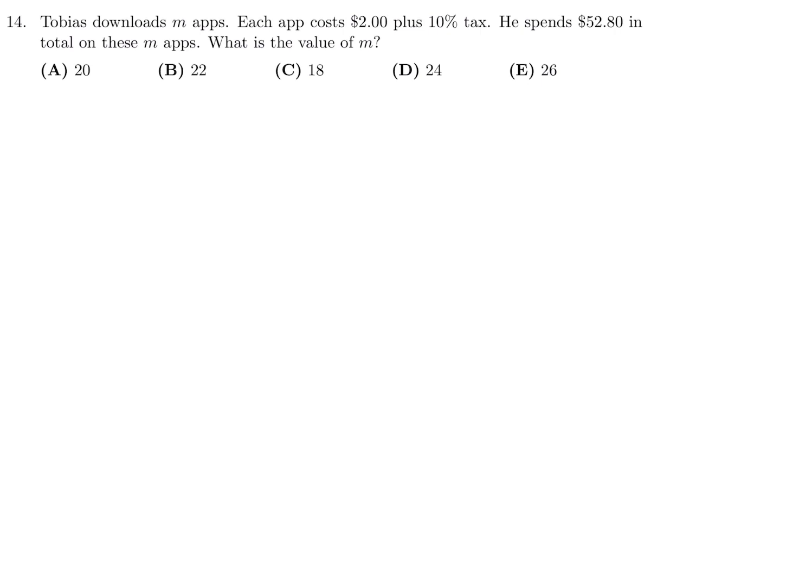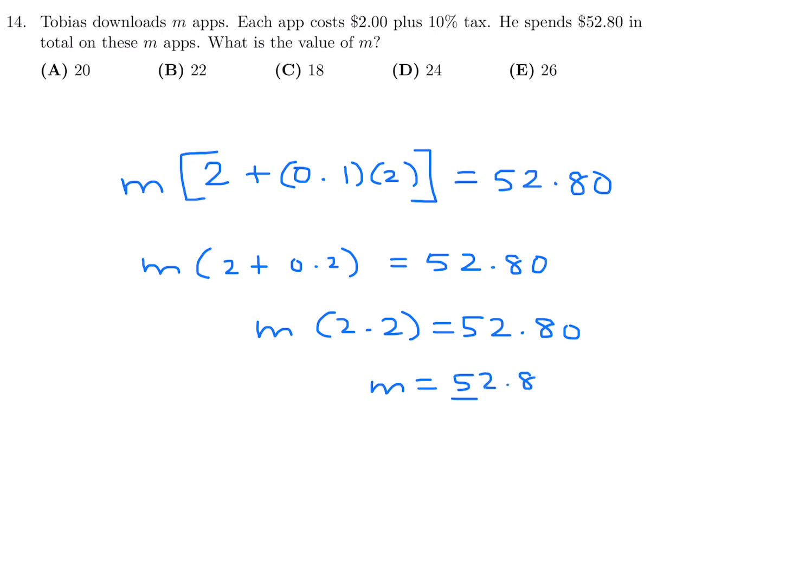Tobias downloaded M apps. Each app costs $2 plus 10% tax. He spends $52.80 in total on these M apps, what is the value of M? So each app is $2 plus 10% of $2. And he has bought M of them, and that total is $52.80. So this is going to be 2 plus 0.2 is equal to $52.80. So that's $2.2. And therefore, $52.80 divided by 2.2 is going to be M. And that is equal to 24 exactly. So he downloaded 24 expensive apps. Number 14, the answer is D.